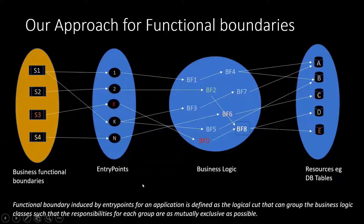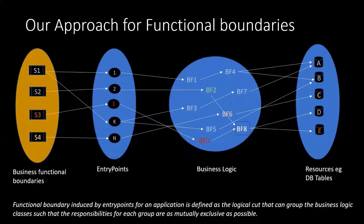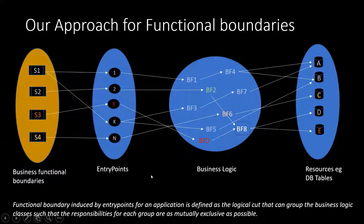These business logic files will interact at the backend with resources like DB tables, files, and so on. We extract these three core source code properties and then use the functional cues thus arrived at, along with the structural flow, to infer the business functional boundaries. The functional boundaries induced by entry points for an application are the logical cuts that can group the business logic classes such that the responsibilities for each group are as mutually exclusive as possible. The functional boundaries effectively overlay over the structural flow using the functional cues.